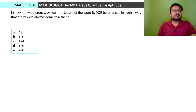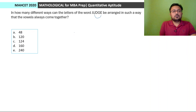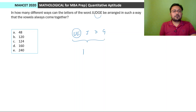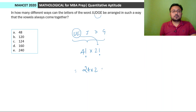Next: In how many ways can the letters of the word JUDGE be arranged such that the vowels always come together? The vowels are U and E. Club them as one group. Remaining letters: J, D, G + the vowel group = 4 groups. Arrange 4 groups: 4! = 24 ways. The 2 vowels within the group can be arranged in 2! = 2 ways. Total = 24×2 = 48. That will be the answer.